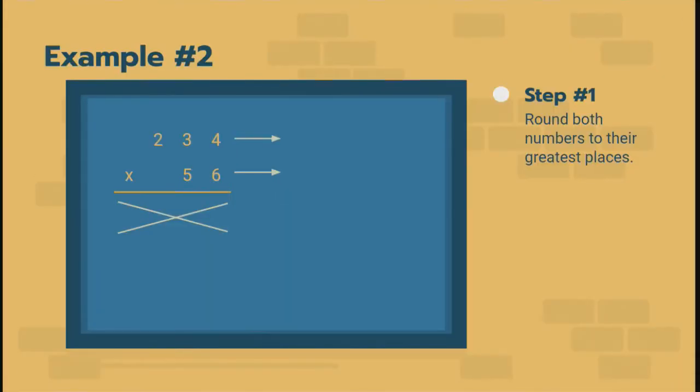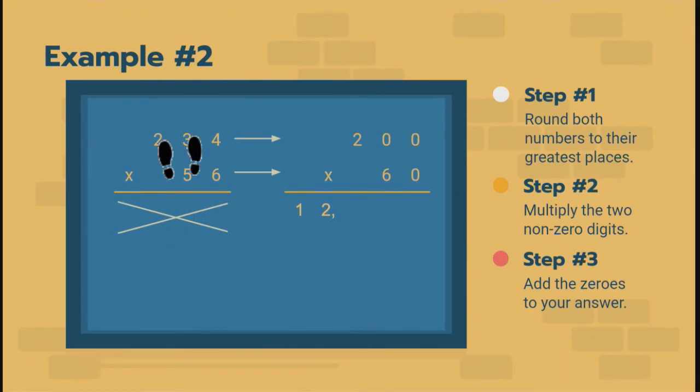Take a look at example two. We'll go a little bit faster. We're going to round both numbers. 234 is 200, 56 rounds to 60. We're going to multiply the two non-zero numbers together. Two and six gives us 12. We are going to add the zeros. How many are there? There's three. 12,000. Much simpler than multiplying this whole problem out and then rounding your answer. It's not what you want to do.